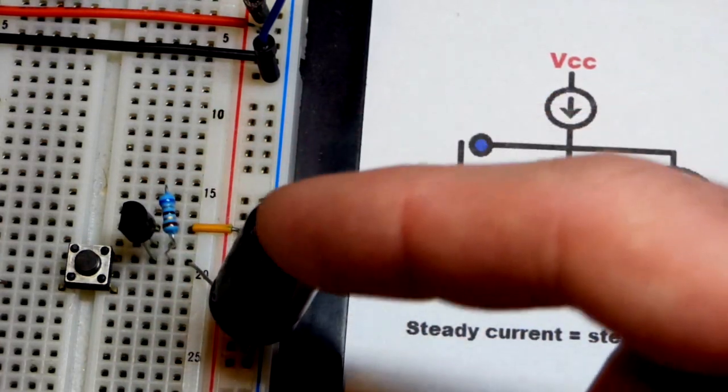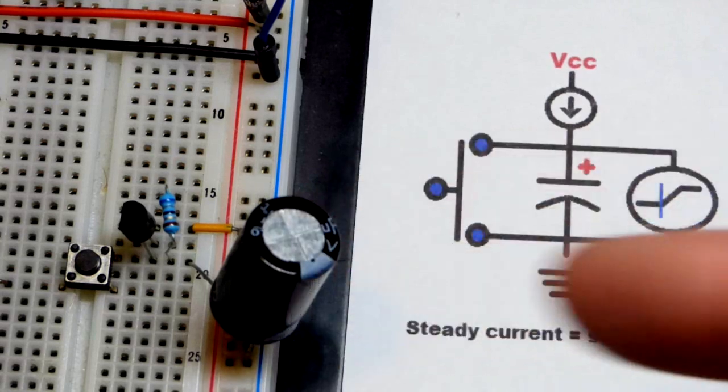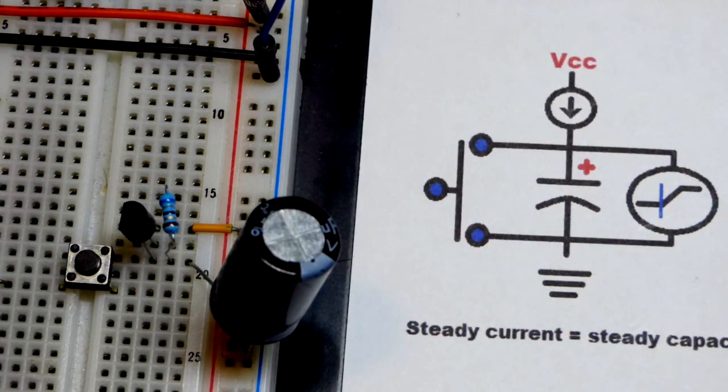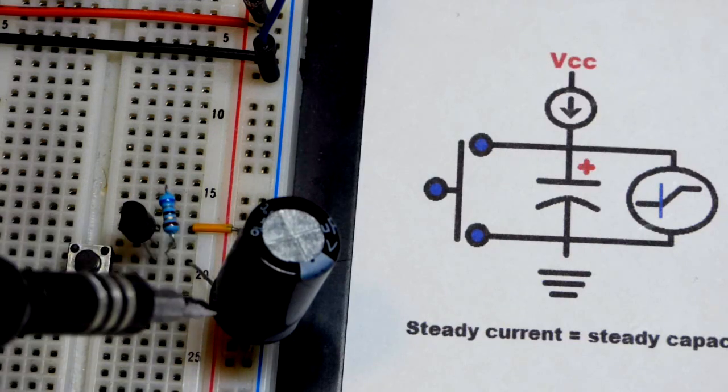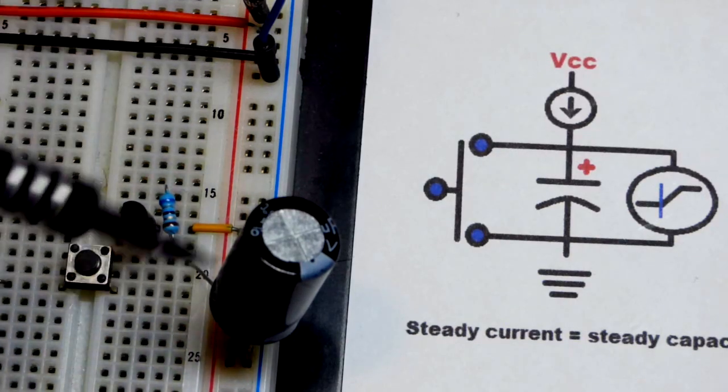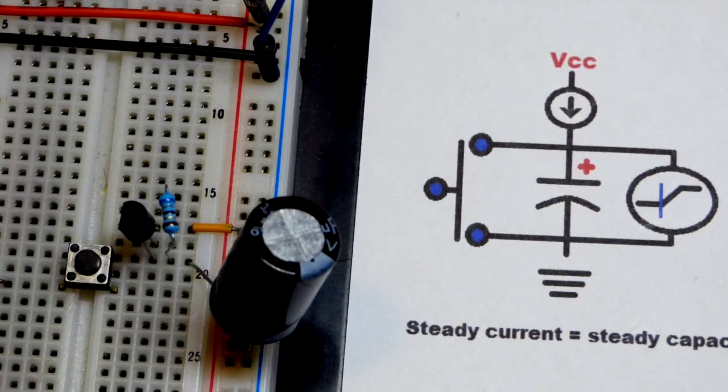Half a milliamp of current for this particular value capacitor you get half of a volt every second and so on. We could also change the value of the capacitor. Lower value capacitor will raise voltage faster and higher value will raise slower.